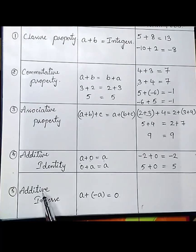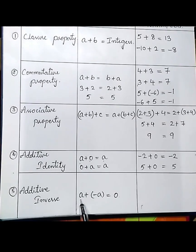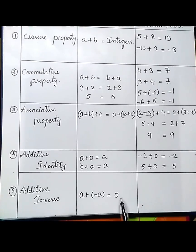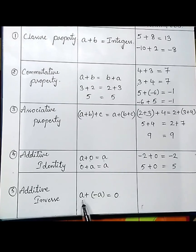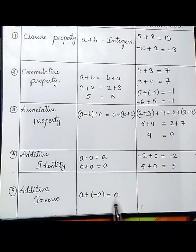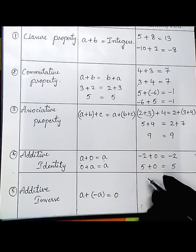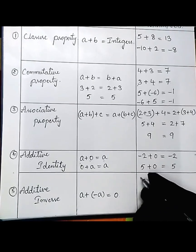The next property is additive inverse. If a is an integer, what should be added to a so that it becomes the additive identity — that is, zero? If you add a and minus a, you get 0. This is called additive inverse.